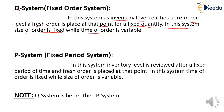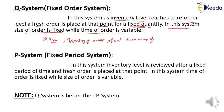The time depends only on the reorder level. So in the Q system, the quantity of order is fixed and the order is placed at the reorder level. The two important points to remember: first, the order is placed at the reorder level; second, the quantity of order is fixed but the time of order is variable.